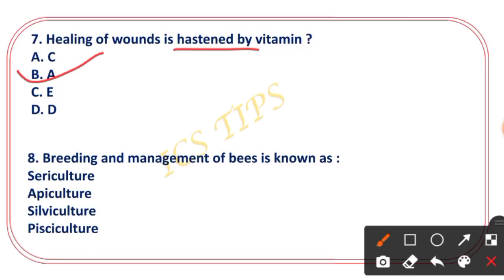The next question: the breeding and management of bees is known as what? The answer is option B — apiculture is the term for the breeding and management of bees.